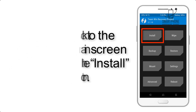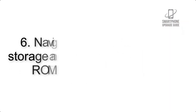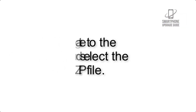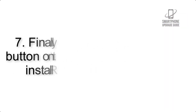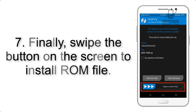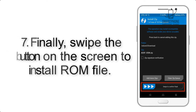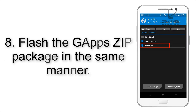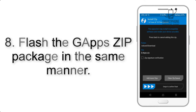Step 5: Go back to the recovery main screen and tap on the Install button. Step 6: Navigate to the storage and select the ROM zip file. Step 7: Finally, swipe the button on the screen to install the ROM file.